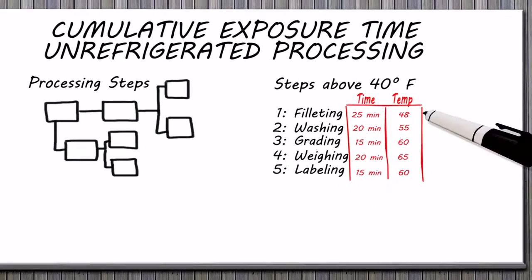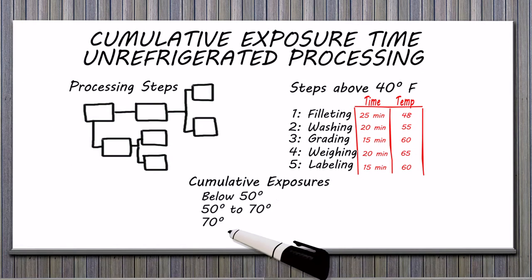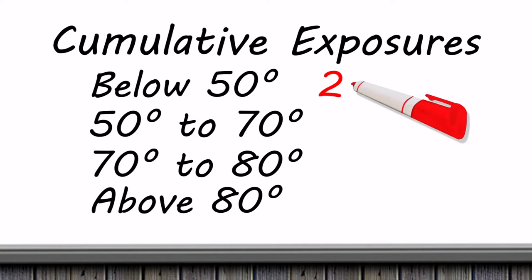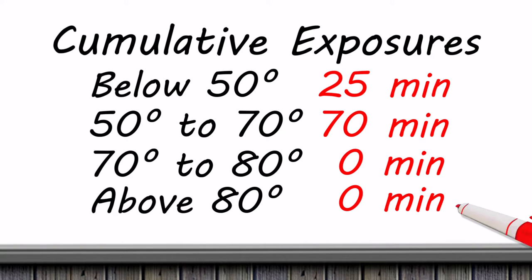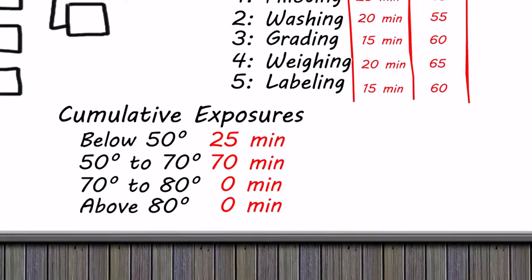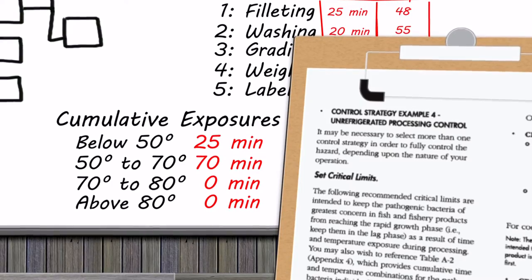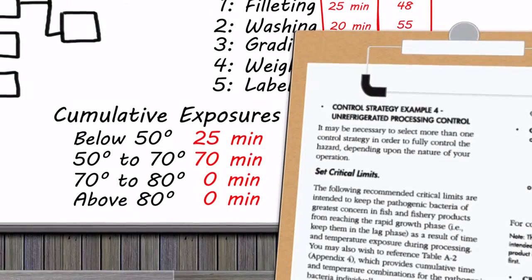Once you know the exposure time and temperatures for each process step, separately add up all of the time where exposures are below 50 degrees, between 50 and 70 degrees, between 70 and 80 degrees, and above 80 degrees to obtain cumulative exposure time for each temperature range. Compare these with the critical limit options listed under Control Strategy 4 to identify the option that best suits your operation.